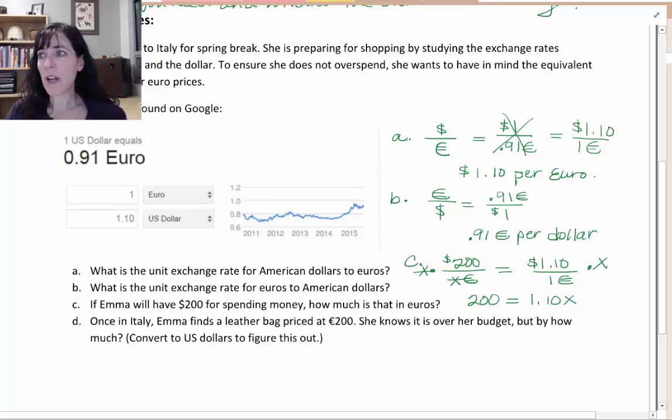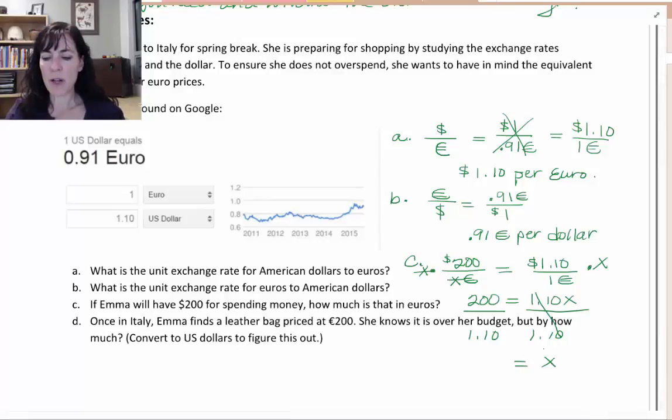And I want that x by itself. So I will do the opposite of multiply, and I will divide by that one dollar ten cents on both sides. And so then I end up - these one dollar ten cents cancel, and I have x equals two hundred divided by one dollar ten cents.